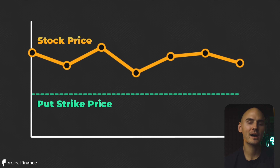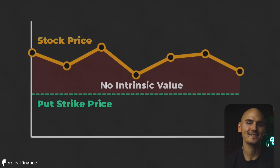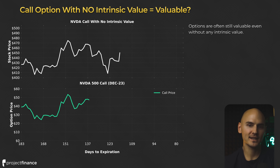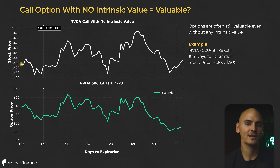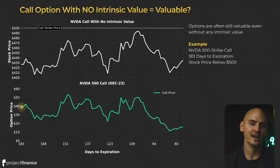A put option can only have positive intrinsic value — it cannot have negative intrinsic value. If the stock price is above its strike price, its intrinsic value is zero. But options with no intrinsic value can still be valuable, and in fact there are many times where options with no intrinsic value can be really expensive. Here we're looking at NVIDIA stock price versus a 500 strike call option with 183 days to expiration. At the beginning of the period, the stock price is at $430 and the call strike price is at $500, which is $70 above the current stock price. Even though the stock price was $70 below the strike price, the call's price was $40, meaning its value was $4,000. So this is a call option with no intrinsic value, but it is really expensive.